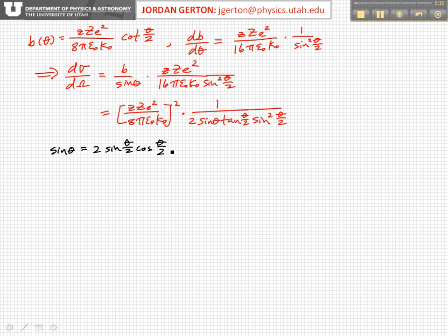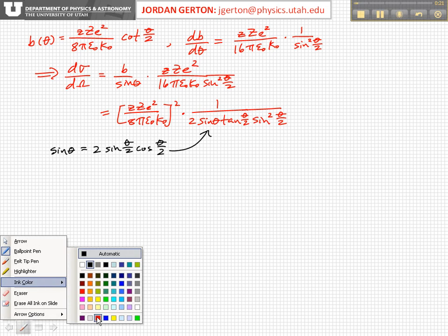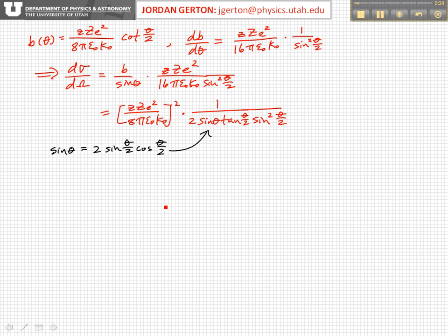When we plug that in for sine of theta, the final expression for the differential cross-section is equal to little z, big z, e squared over 16 pi epsilon naught k naught squared times 1 over sine to the fourth of theta over 2.